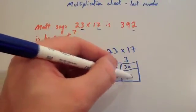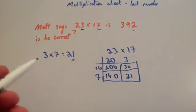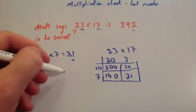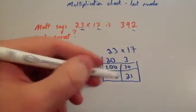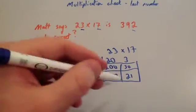And 7 times 3 is 21, which we've just done to check the multiplication. If we add these up together, you'll see we've got 200, 140, 30, and 21.